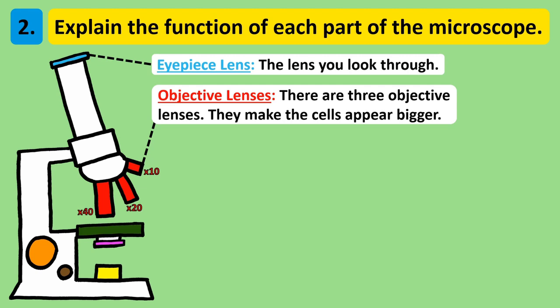At any time you're viewing cells under the microscope, you are looking through two lenses, the eyepiece lens and one objective lens. These two lenses work together to make cells appear larger. For example, the eyepiece lens might have a magnification of times 10, and the high powered objective lens has a magnification of times 40. When you look through both of these lenses together, it will make cells appear 400 times larger than they are in reality.